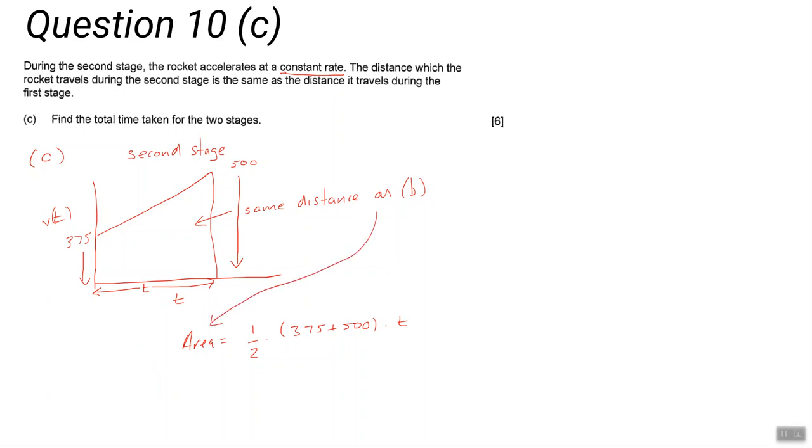To find the total time taken for the two stages, don't forget you need to add together this time plus your value of k from part b to get your final answer.